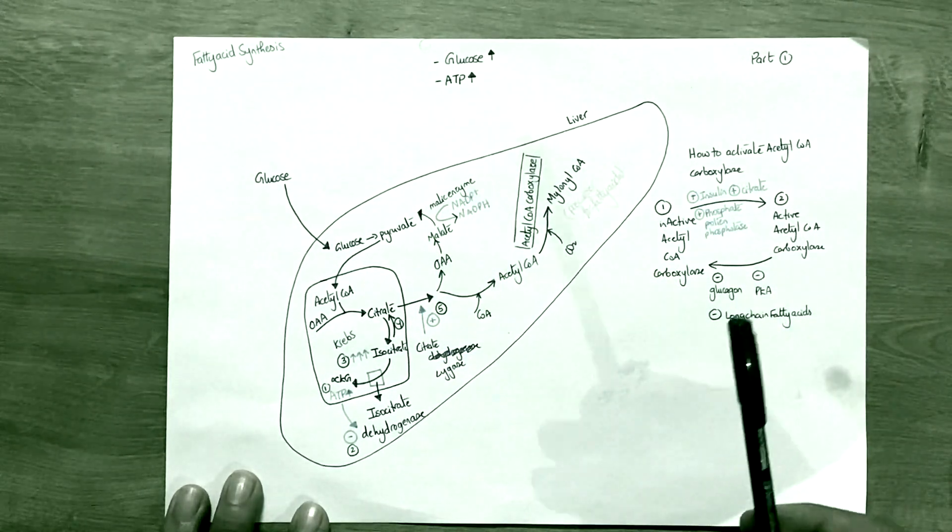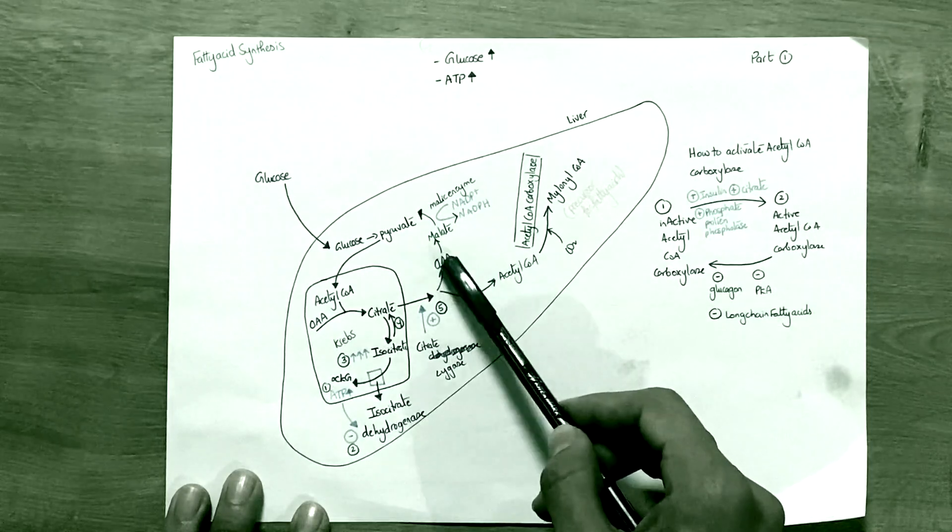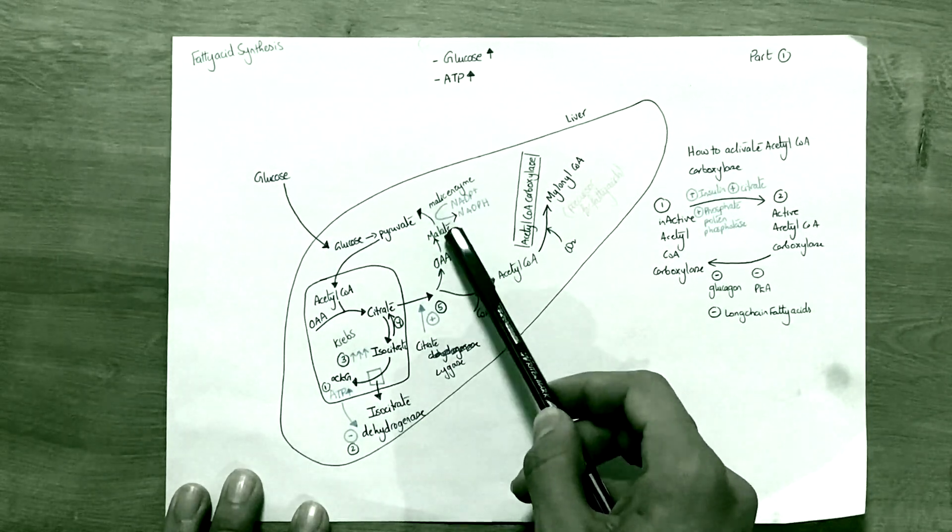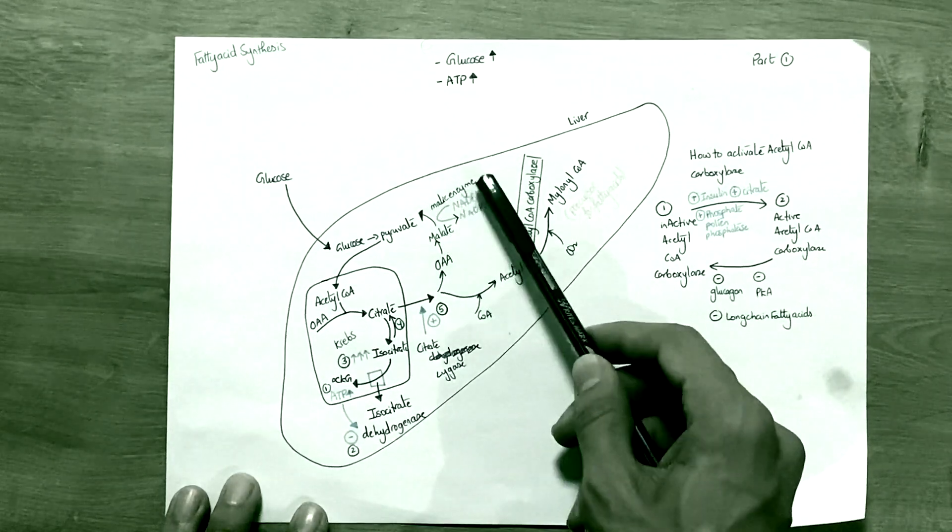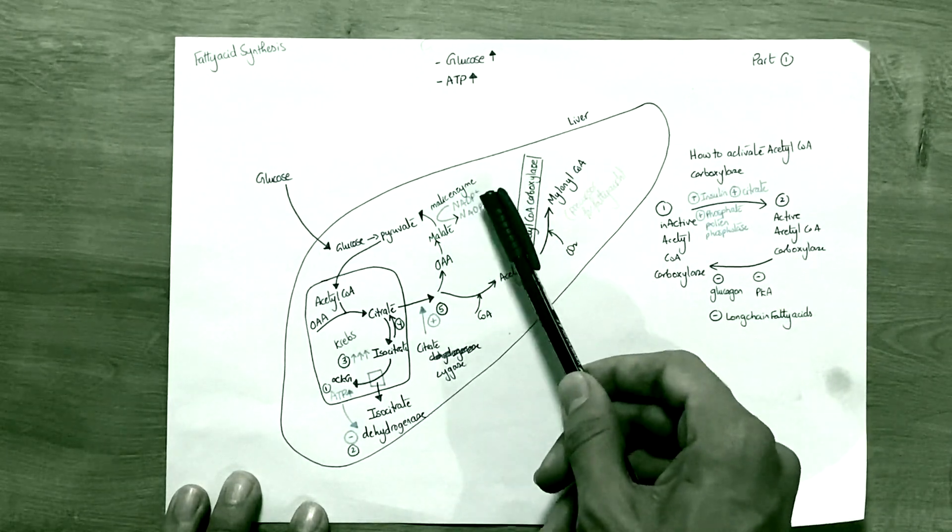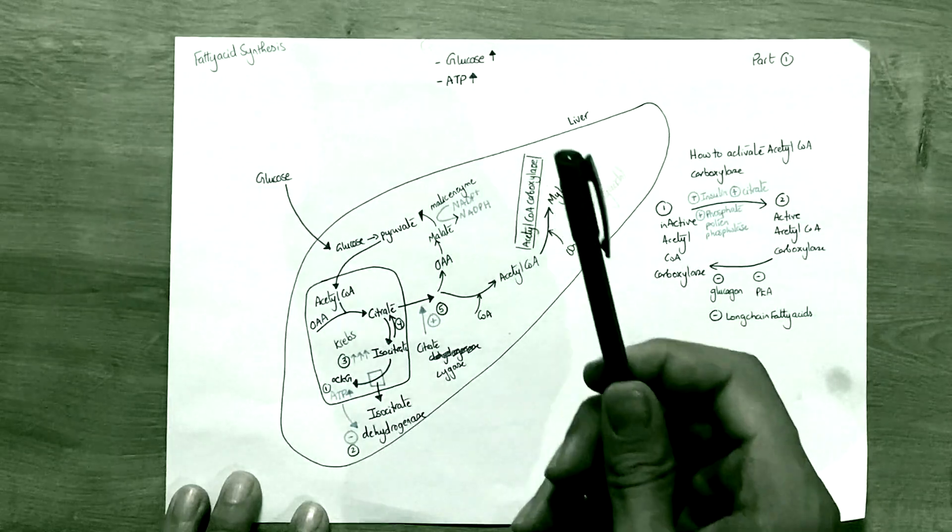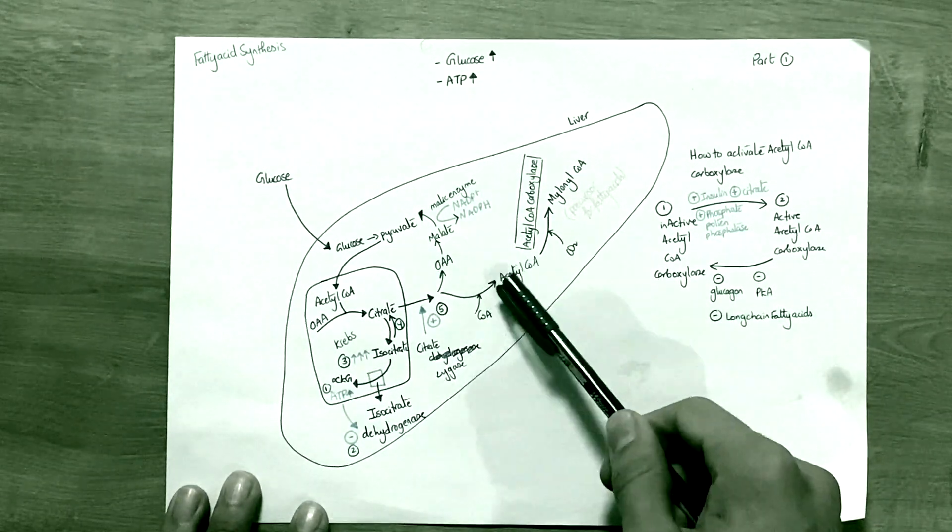The other step is oxaloacetate converts into malate, and then malate converts into pyruvate. Malate converting to pyruvate needs an enzyme called malic acid under the effect of NADP+ converting into NADPH.